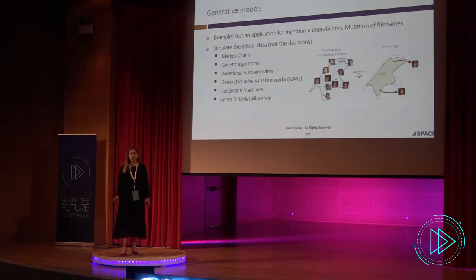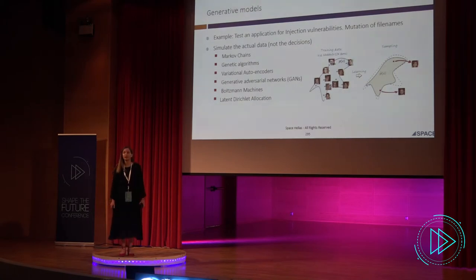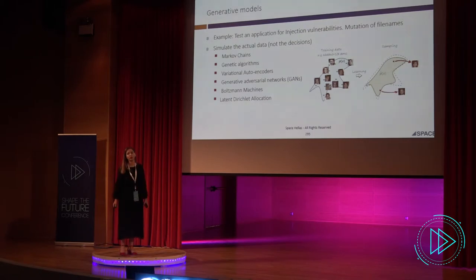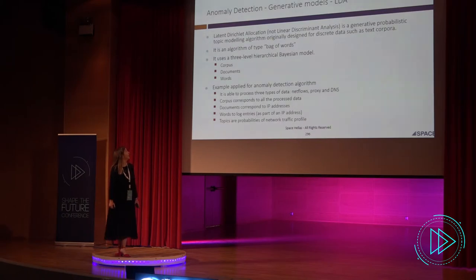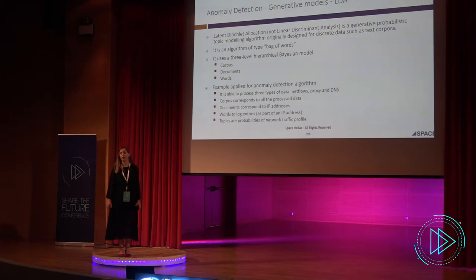Although there are many categories of supervised and unsupervised machine learning, we are going to discuss generative models. For example, to test an application for vulnerabilities and mutation of file names, we want to simulate the actual data, not the decisions. To do this, we use algorithms like Markov chains, generative adversarial networks, and Latent Dirichlet Allocation — LDA. LDA is a probabilistic algorithm and works with a collection of words. In the network traffic case, documents are IP addresses and log entries are the words.